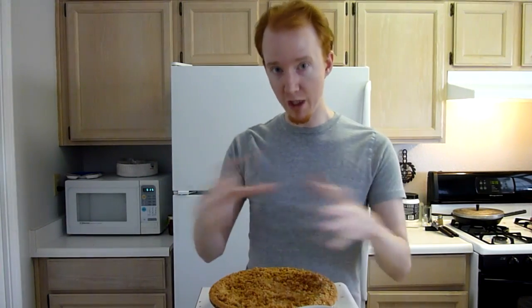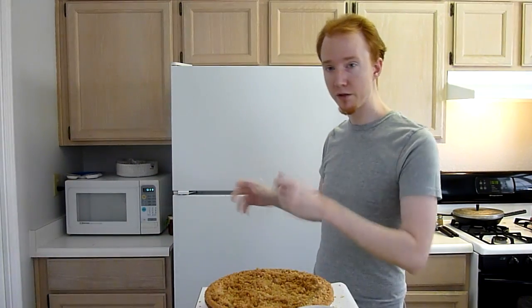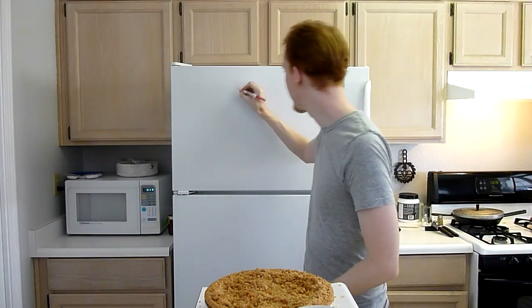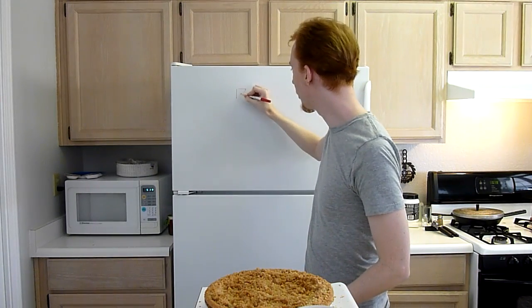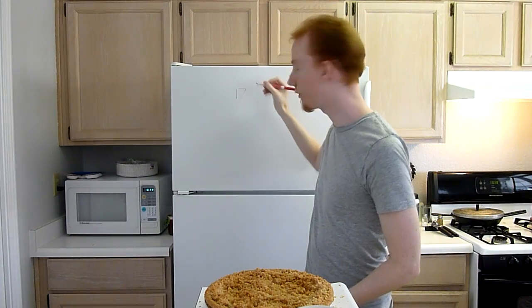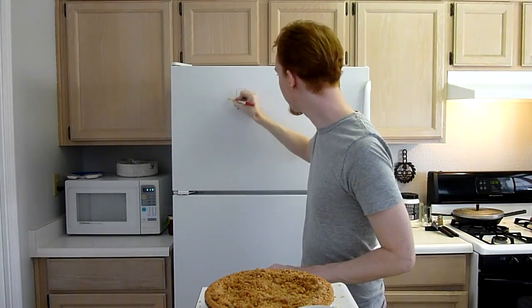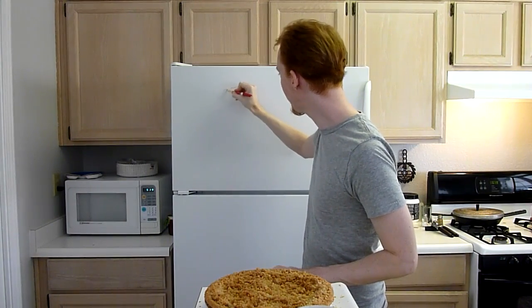There are always three parts to division: you've got the thing you're dividing — this pie — the number of shares you are dividing it into, and the amount each person is going to get. So for this lesson, let's start with 17 pies. And let's divide those 17 pies by three people.